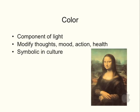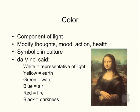Most cultures use color symbolically. Da Vinci said white was representative of light, that yellow stood for the earth, that green was for water, blue indicated air, red was to signify fire, and black was to represent darkness. For example, in U.S. culture, red often indicates stop, and when you see green, it means go.